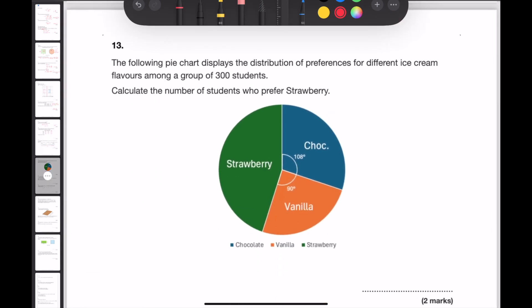Question 13. The following pie chart displays the distribution of preferences for different ice cream flavors among a group of 300 students. Calculate the number of students who prefer strawberry. Angles in a pie chart add up to 360 degrees. So to calculate the angle that strawberry represents, we need to do 360, take away 108, take away 90. This gives me 162 degrees.